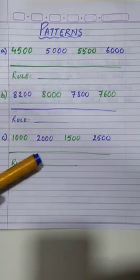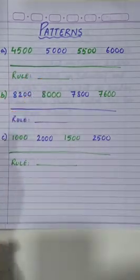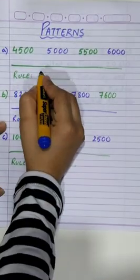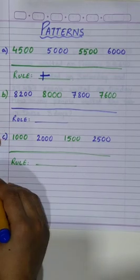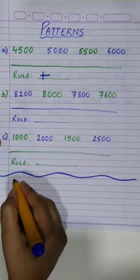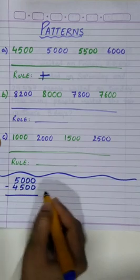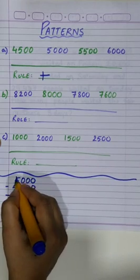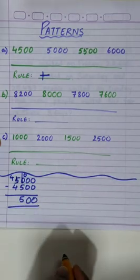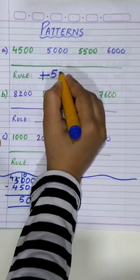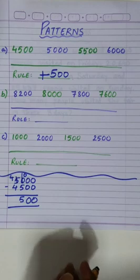4,500 and 5,000 — this is bigger, so we are going to use the addition rule. But how much to add? For that, we have to subtract 4,500 from 5,000. When we subtract, we get the answer 500. So our rule says: add 500, and the pattern continues.